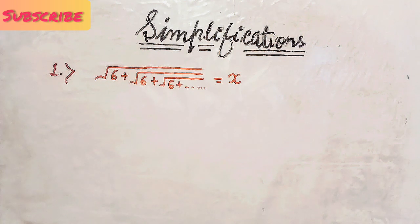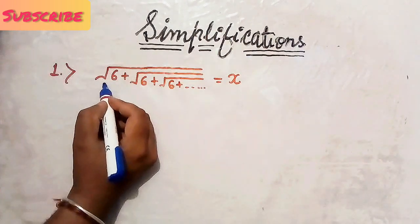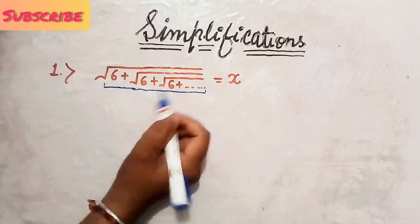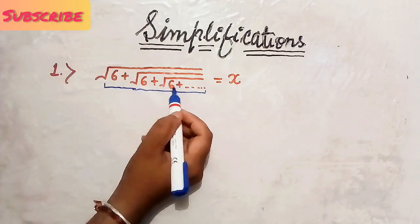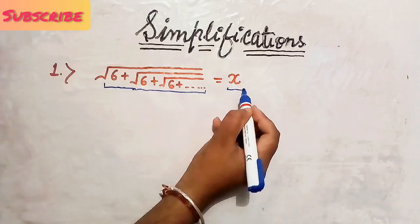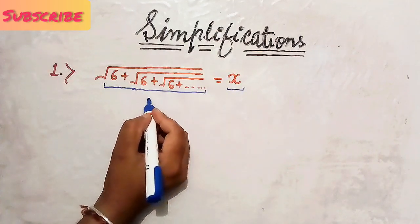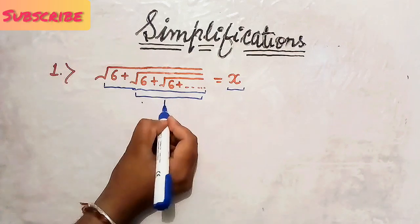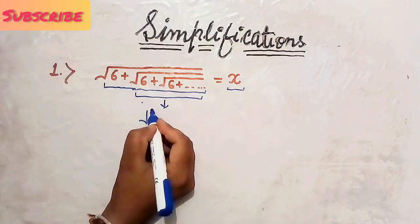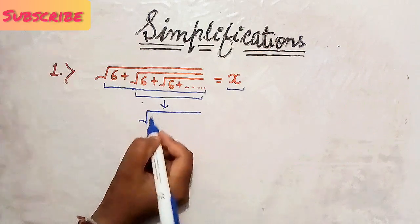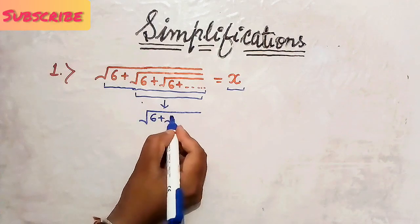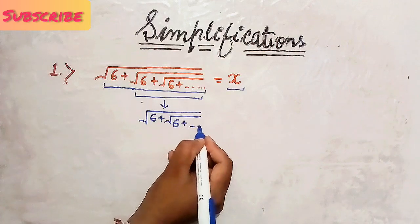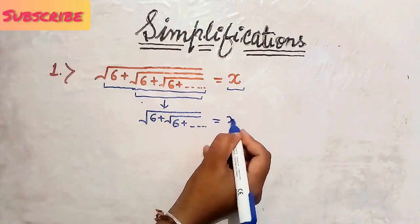The first question is: the whole square root of 6 plus square root of 6 plus whole square root of 6 plus, and so on, equals X. This pattern is endless. If I leave the first part, the remaining part is square root of 6 plus whole square root of 6 again plus, and so on — and you can see the pattern is the same again, which was equal to X.